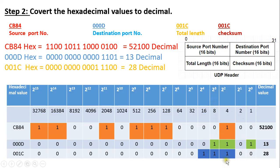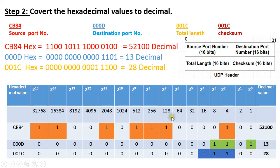The binary weights of 001C are 2^2 + 2^3 + 2^4, that is 4 + 8 + 16, equal to 28 in decimal. The last field is not calculated separately because it is just a repetition of the third chunk — the third and fourth hexadecimal chunks in the example are the same, so the checksum calculation is not repeated. Therefore: source port number is 52100 decimal, destination port number is 13 decimal, and the total length field is 28 decimal, that is 28 bytes.